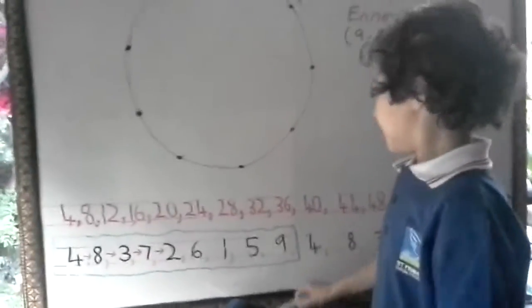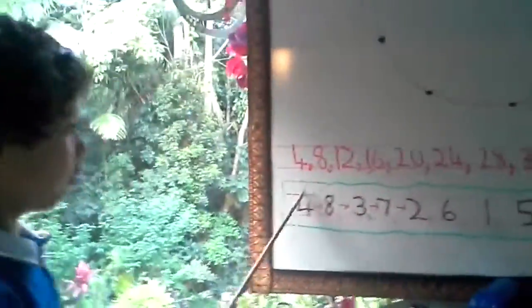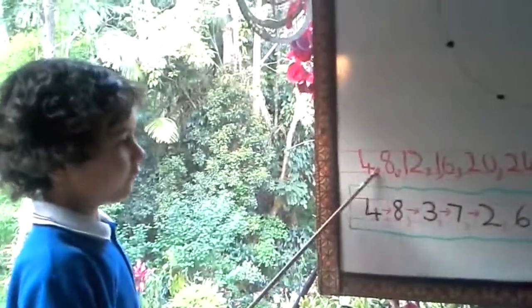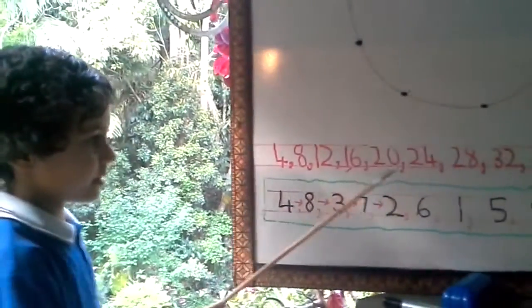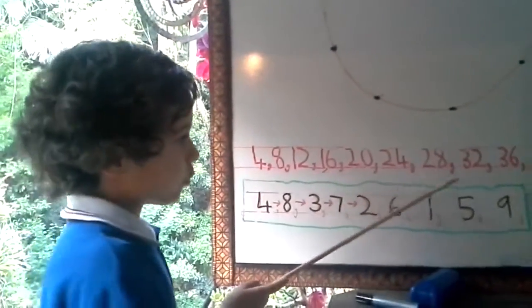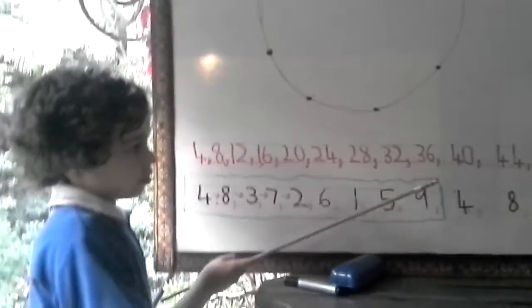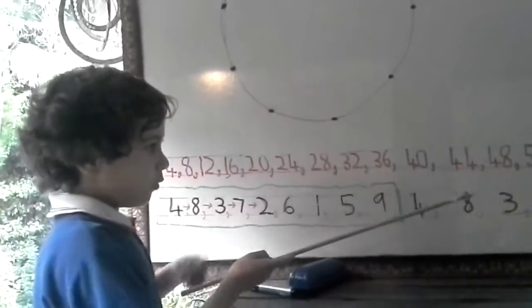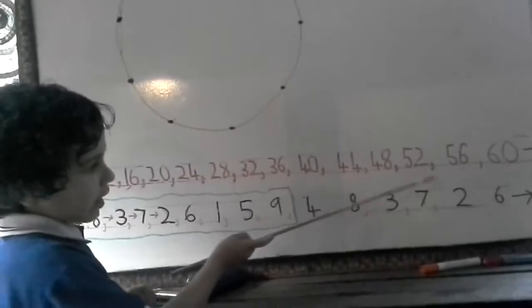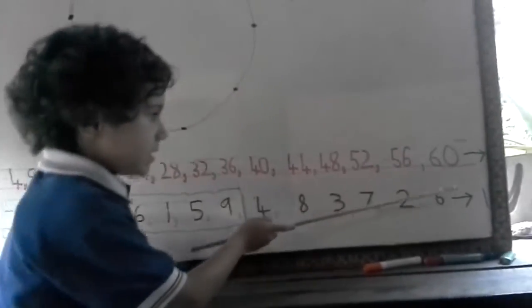So over here you can see that we have the 4. So we're going by 4s. 4, 8, 12, 16, 20, 24, 28, 32, 36, 40, 44, 48, 52, 56, 60.